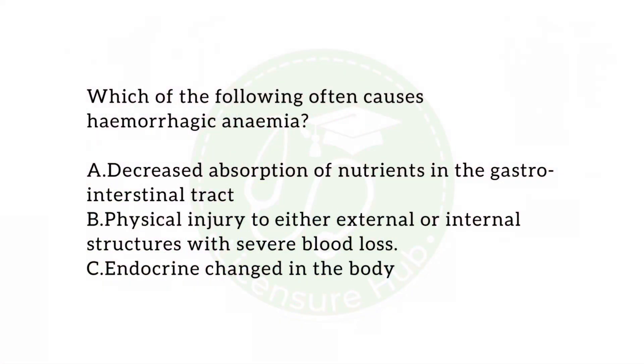Our next question reads: which of the following causes hemorrhagic anemia? A) a decreased absorption of nutrients in the gastrointestinal tract; B) physical injury to either external or internal structures with severe blood loss; or D) endocrine changes in the body.